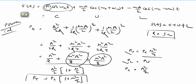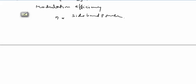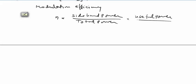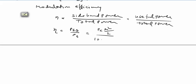We now introduce the term modulation efficiency. Modulation efficiency is defined as sideband power divided by total power, since sideband power is the useful power. Efficiency η = P_sideband / P_total. Sideband power is P_C · μ²/2 and total power is P_C (1 + μ²/2). Cancelling P_C gives the efficiency formula: η = μ² / (2 + μ²).